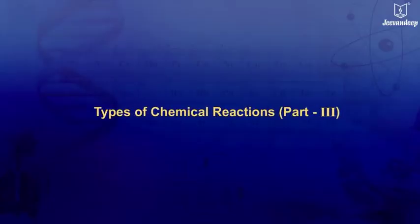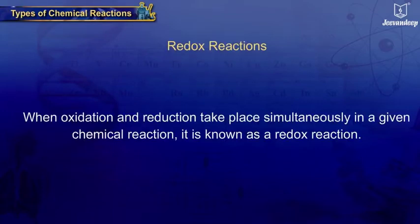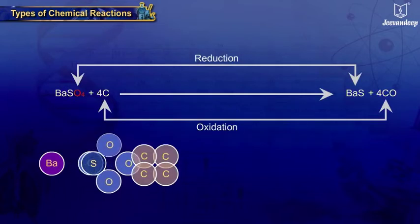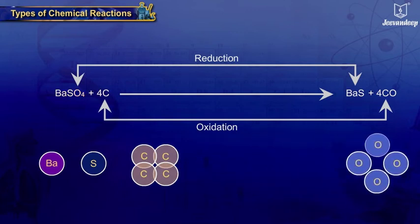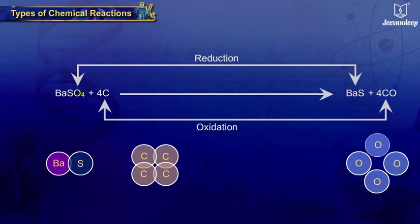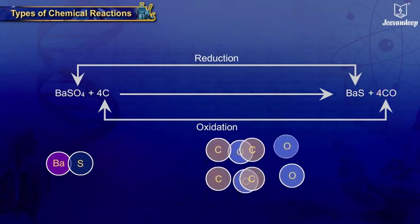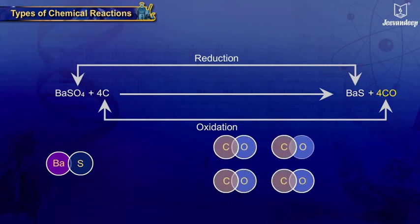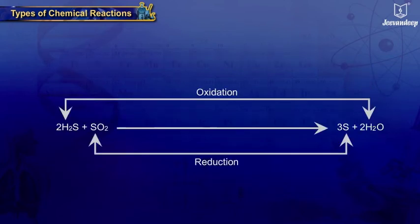Types of chemical reactions, Part 3: Redox reactions. When oxidation and reduction take place simultaneously in a given chemical reaction, it is known as a redox reaction. In the first equation, oxygen is removed from barium sulfate, reducing it to barium sulfide, and the removed oxygen adds to carbon, oxidizing it to carbon monoxide.